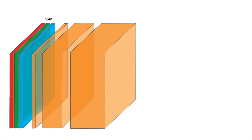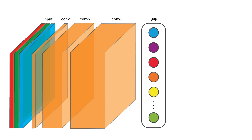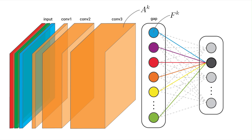Here you can see an example of how a GAP layer can be included in the network. In this case, we have three convolutional layers with an increasing number of feature maps. The GAP layer comes after the last convolutional layer, Conv3. It will have the same number of values FK as there are feature maps AK in Conv3. Finally, we have a fully connected layer. This connects all output logits YC to the GAP values with weights WCK.